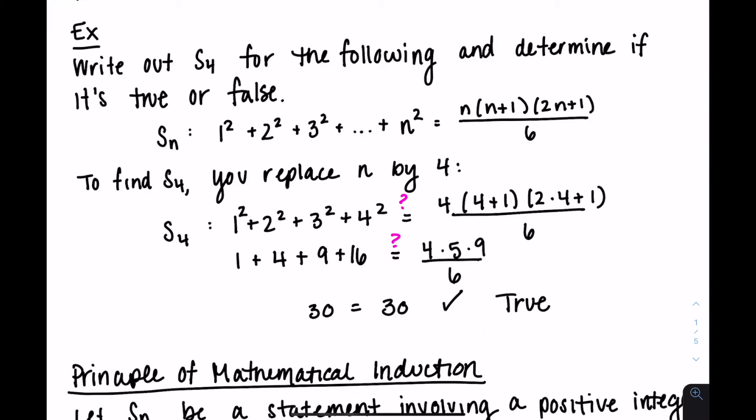The principle of mathematical induction would help us show this statement is true for every single value of N. So if I summed from 1 squared to 100 squared, it would equal the right hand side with N replaced by 100. The same thing from 1 squared to a million squared — it's equal to the right hand side with N replaced by a million.